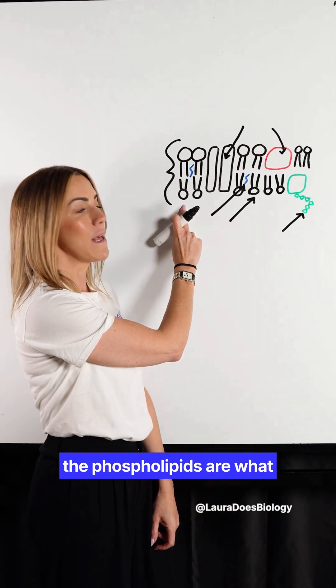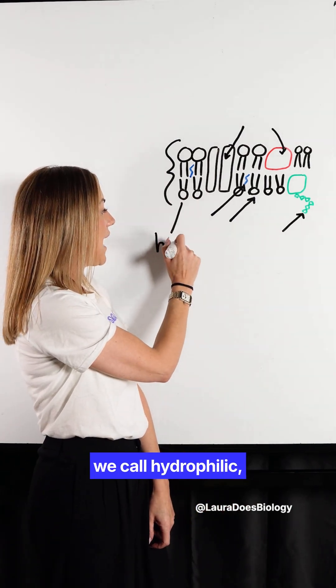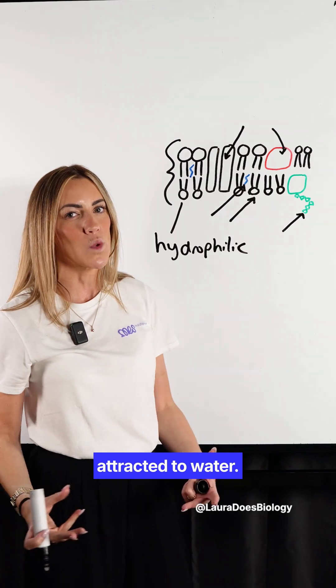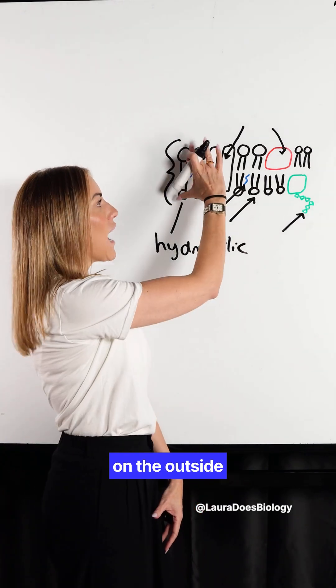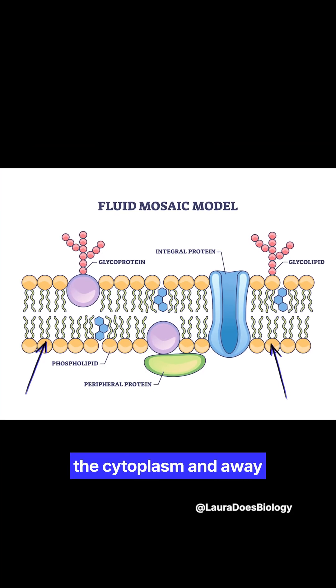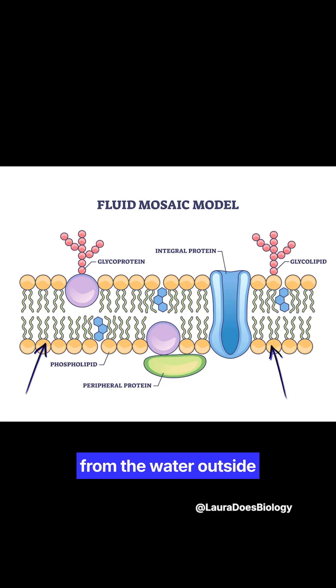Now the heads of the phospholipids are what we call hydrophilic, which basically means they're attracted to water. So you'll find the heads on the outside of the cell membrane facing towards the water in the cytoplasm and the water outside of the cell.